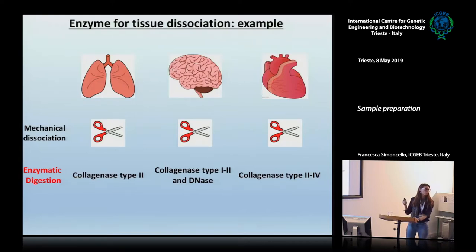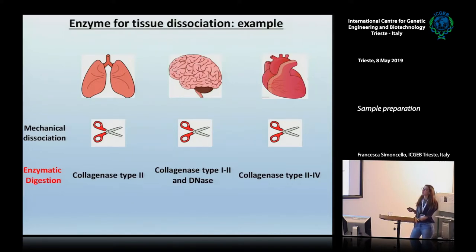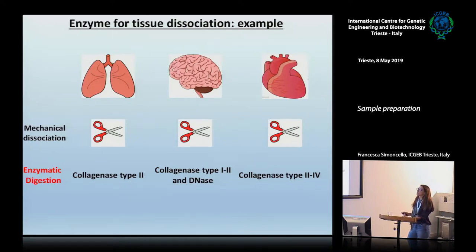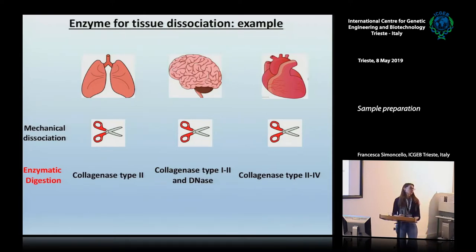Always check in the literature which is the best enzyme to use in order to properly dissociate your tissue. For example, I work with the lung and in order to isolate immune cells from the lung, I perform a mechanical dissociation and then use collagenase type 2. But if your tissue is more complex, like a brain, a single type of collagenase is not enough — you have to perform enzymatic dissociation with a combination of collagenase type 1 and collagenase type 2. Also for the heart, one type of collagenase is not enough; in this case it's better to use collagenase type 2 and collagenase type 4. So it's extremely important to check the literature for the best solution for your specific tissue.